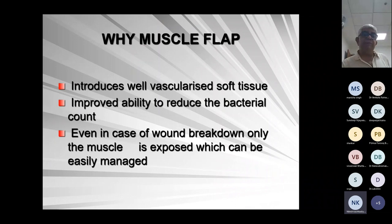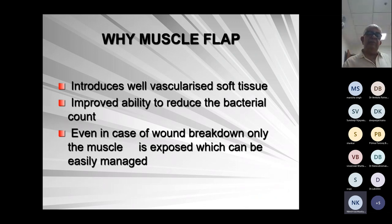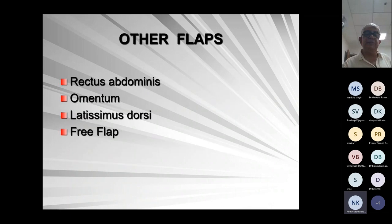Why a muscle flap? It introduces well-vascularized tissue, improves ability to reduce the bacterial count, and if the wound breaks down, the muscle is exposed — it can be managed easily — instead of the mediastinum being exposed. Other flaps which are used include the rectus abdominis, omentum, latissimus dorsi, and pectoralis minor. But I have no experience with those; I am very happy managing them with pectoralis major — either with turnover or with advancement.